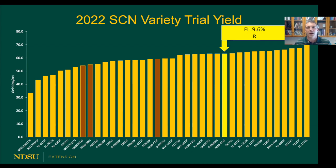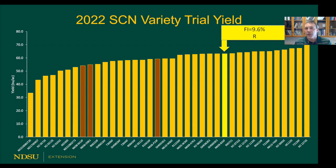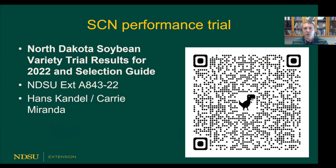A variety is considered resistant if the female index is less than 10 percent — and here you have one that is really robust and meets that threshold. This is pretty labor-intensive and takes months to do in the greenhouse, and we don't have data for all varieties, but I want to emphasize that the variability in these trials is largely related to how well that resistance is working. If there's a variety you're interested in, try to get it on the resistance side if you've got SCN. If you have a resistant variety in the ground and it's not yielding the way you expect, or your egg count is really high, switch to a different variety because that resistance might not be holding.